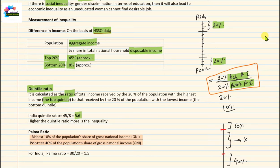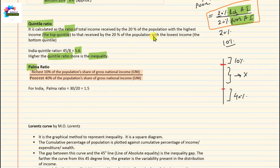Higher the quintile ratio, more is the inequality. The quintile ratio increases when either the income of the rich increases or the aggregate income of the poor decreases. The next ratio to measure inequality is the Palma ratio, given by a person named Palma. It is the richest 10% of the population's share in gross national income (GNI) divided by the poorest 40% of the population's share in GNI. In the quintile ratio we used top 20% and bottom 20%; in the Palma ratio, we take the income of the top 10% rich people divided by the income of the poorest 40%.